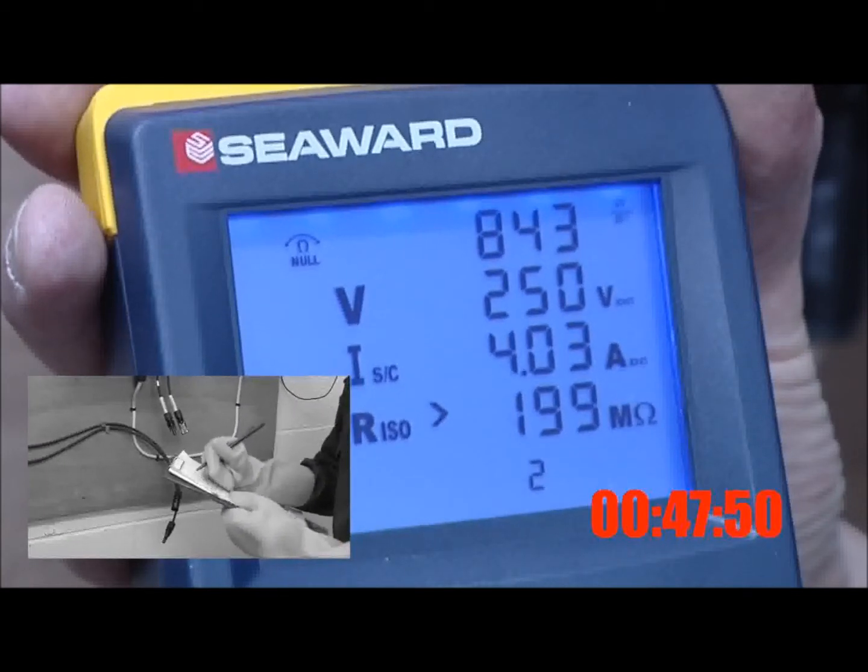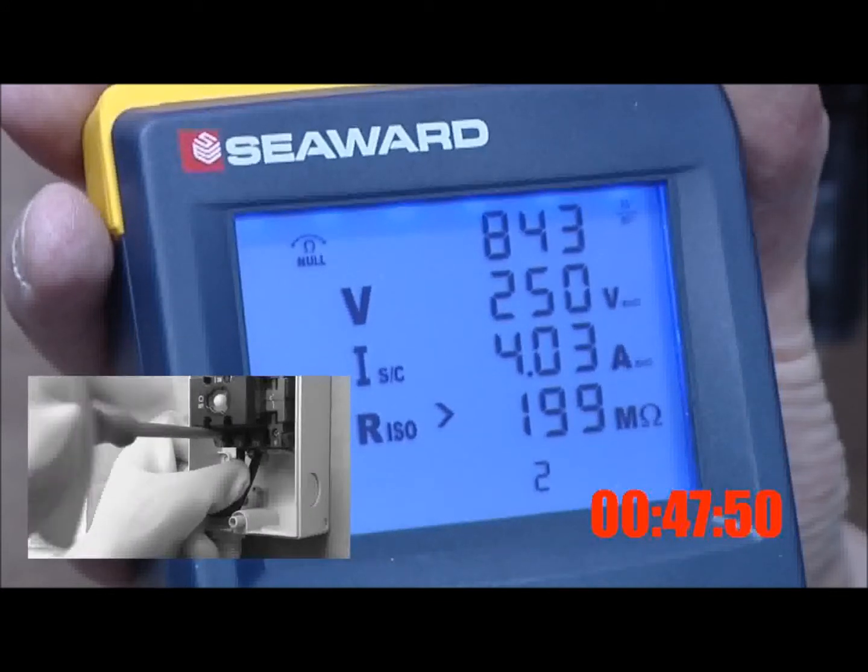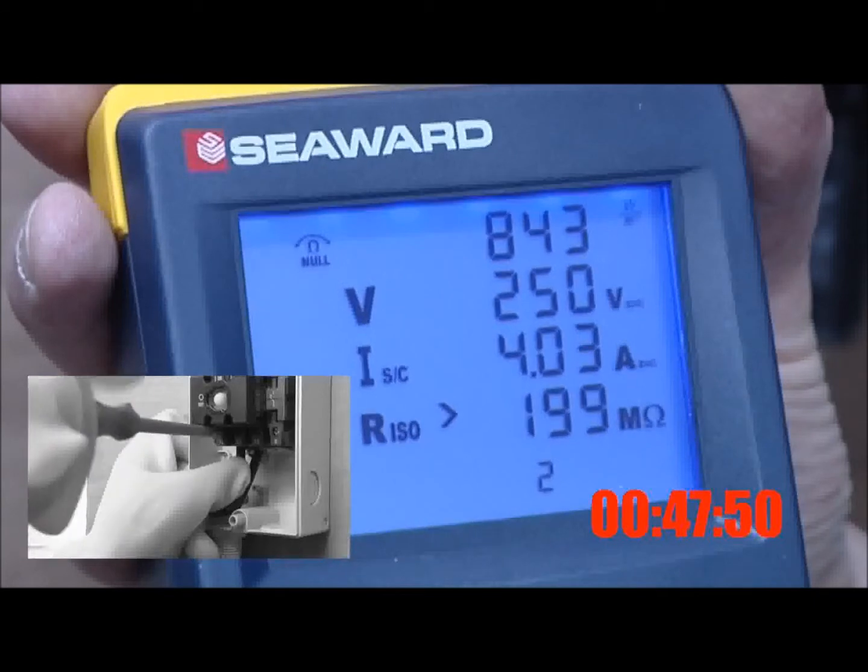The PV150 has completed the open circuit voltage, short circuit current, and insulation resistance tests in approximately 50 seconds. The results are displayed on the screen.